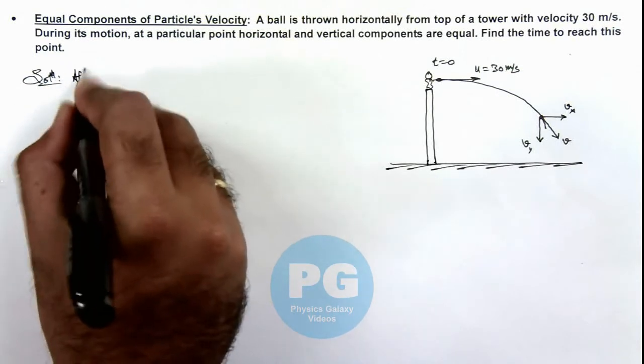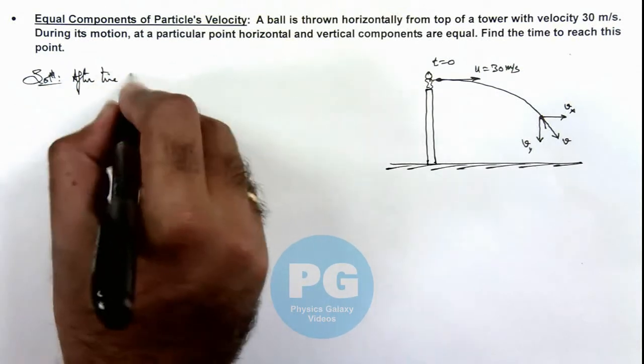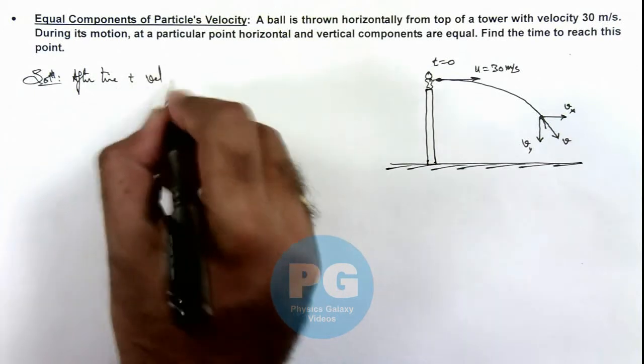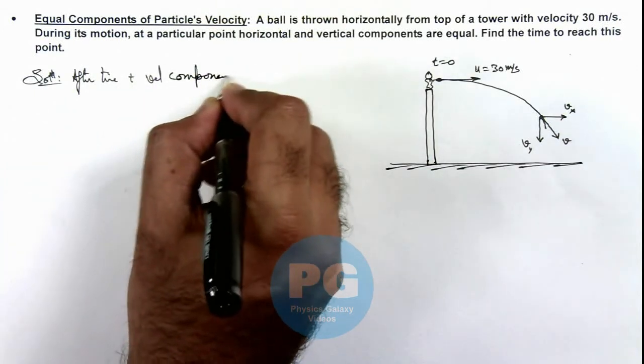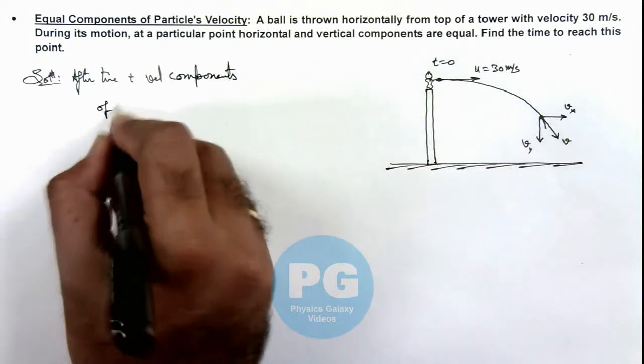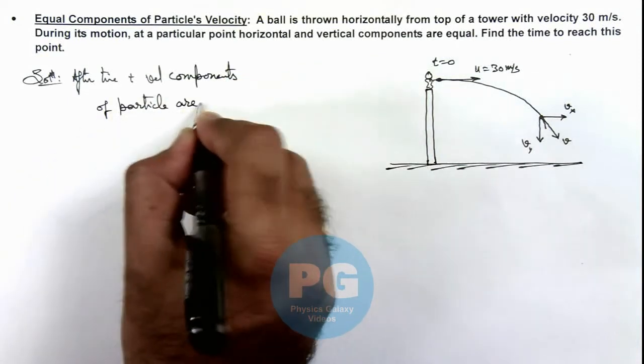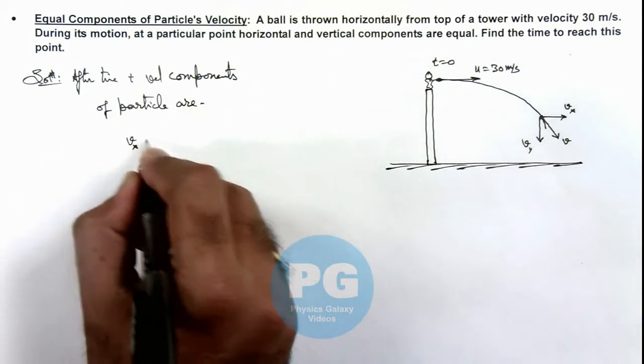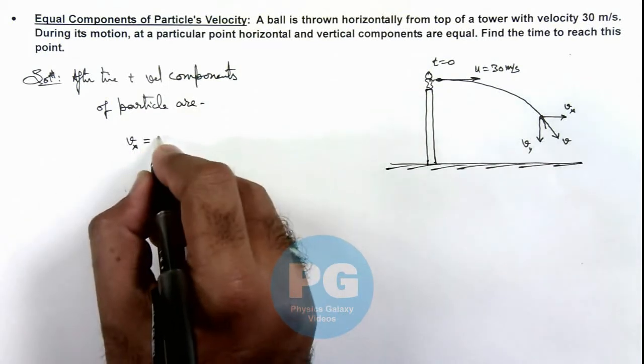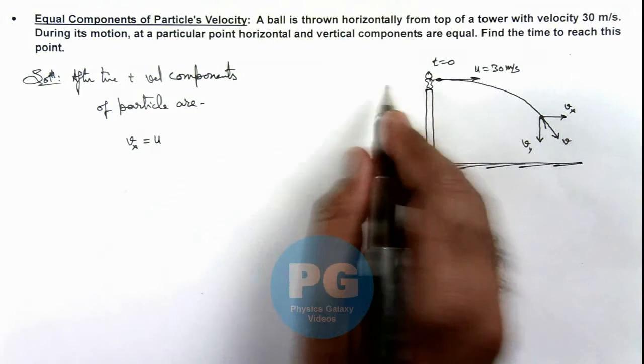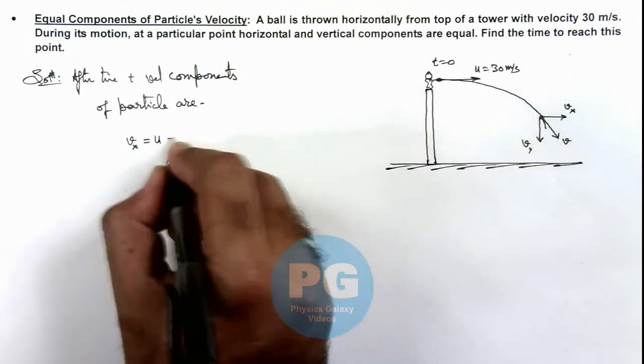So here we can simply write after time t, velocity components of particle are: here we can write the horizontal velocity component remains the initial horizontal velocity which is 30 meters per second.